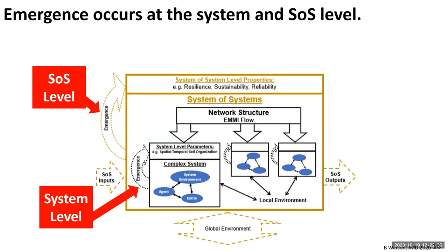To make things worse, emergence occurs at both the system and system-of-systems level. Systems are composed of interactions between agents — things with autonomy — the environment, and technical entities. These three interact to create system-level emergence, such as temporal organization. And since our world is composed of systems of systems, those multiple complex systems interact by exchanging energy, material, money, or information, creating system-of-systems level properties like resilience, sustainability, and reliability. Emergence can propagate upward to cause major system-level performance changes.